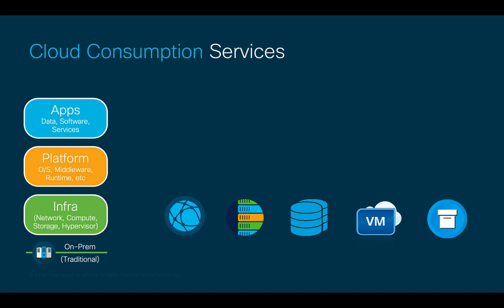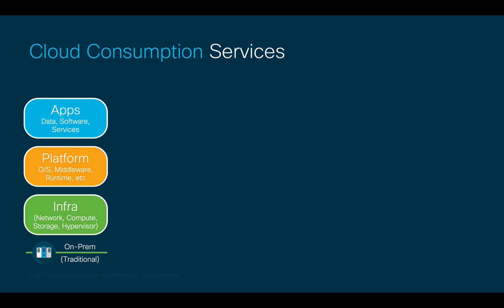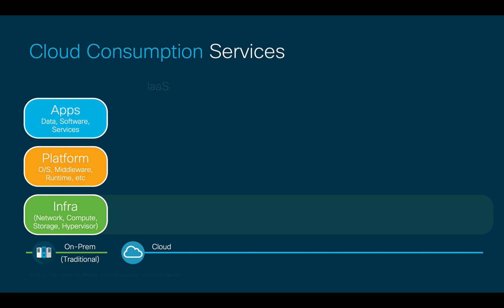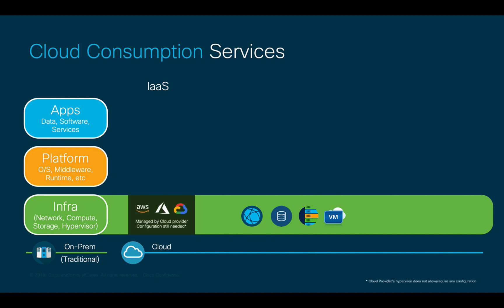Then, we have platforms running on top of that infrastructure, including the operating system, middleware, databases, and many others. And last, we also have applications, which may include multiple sets of software, services, and more. This is very similar in the public cloud. In terms of infrastructure, all the switches, storage, servers, and hypervisors are all managed by the cloud provider. So, there is no need to patch, cable, or maintain anything.